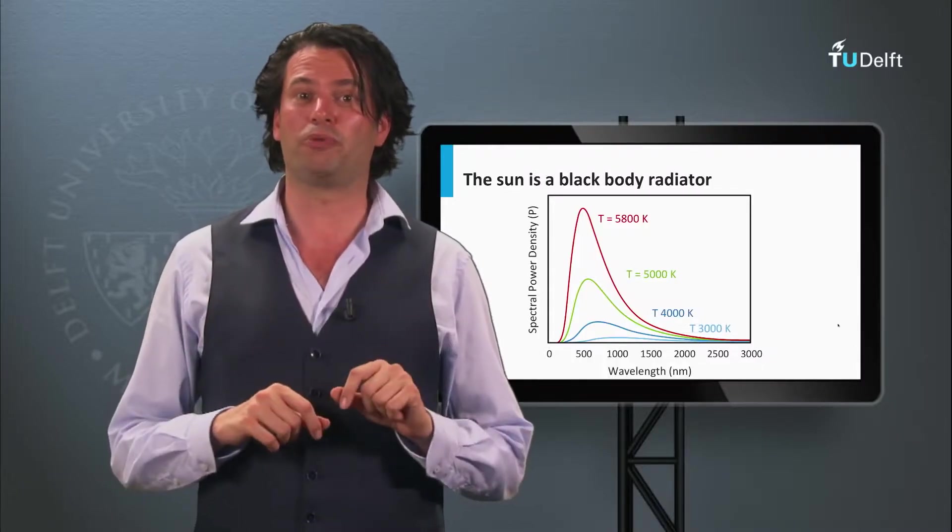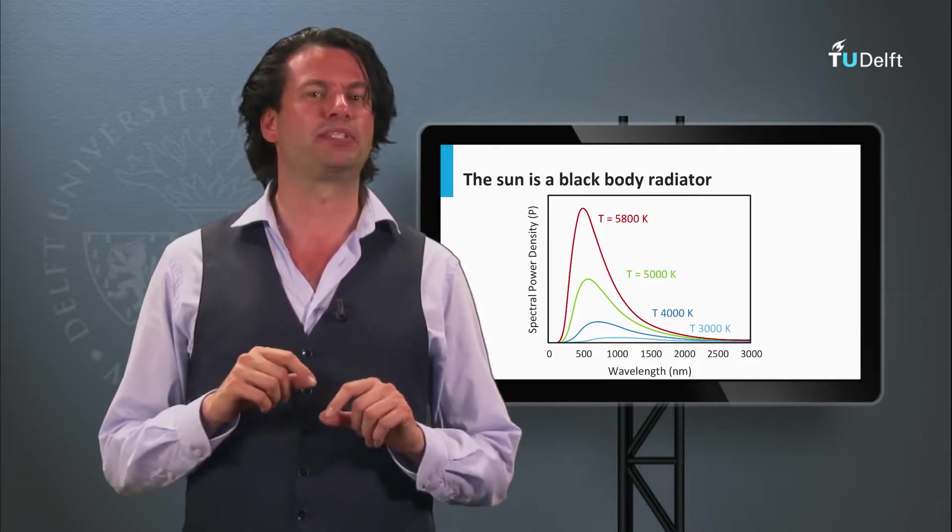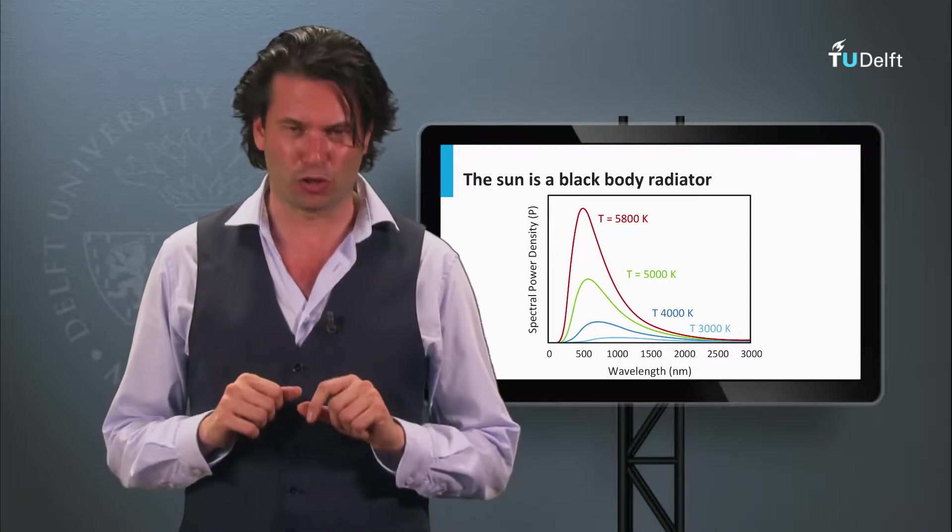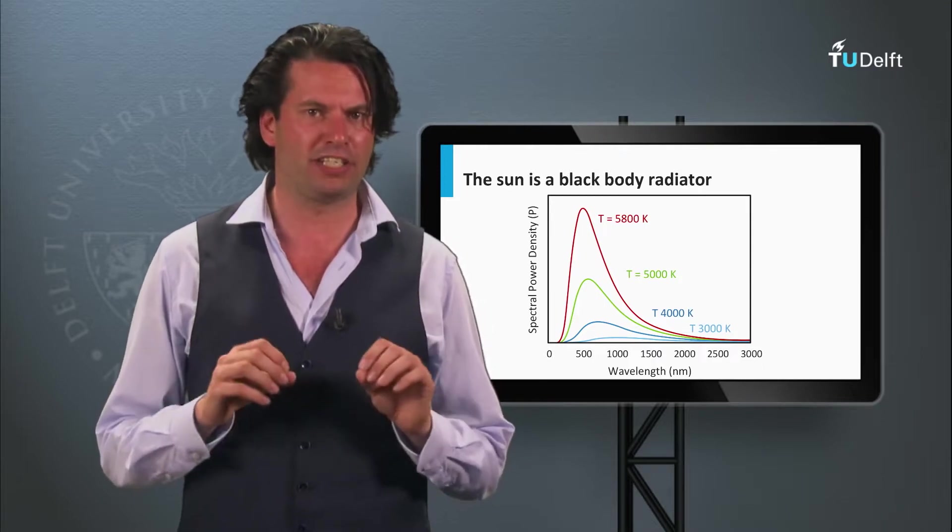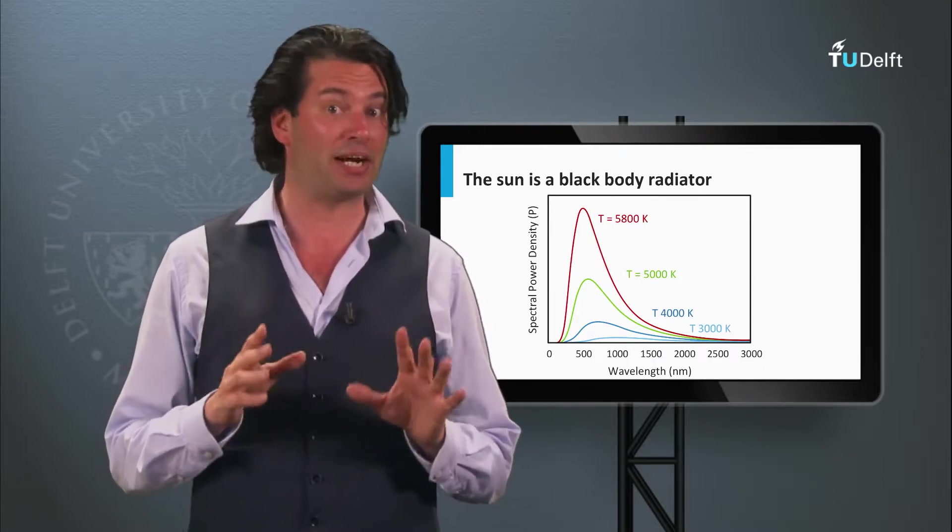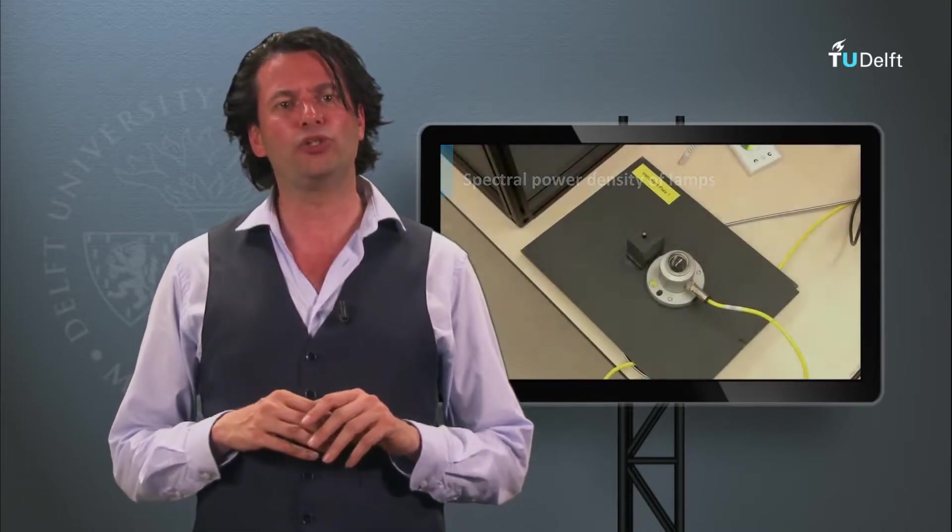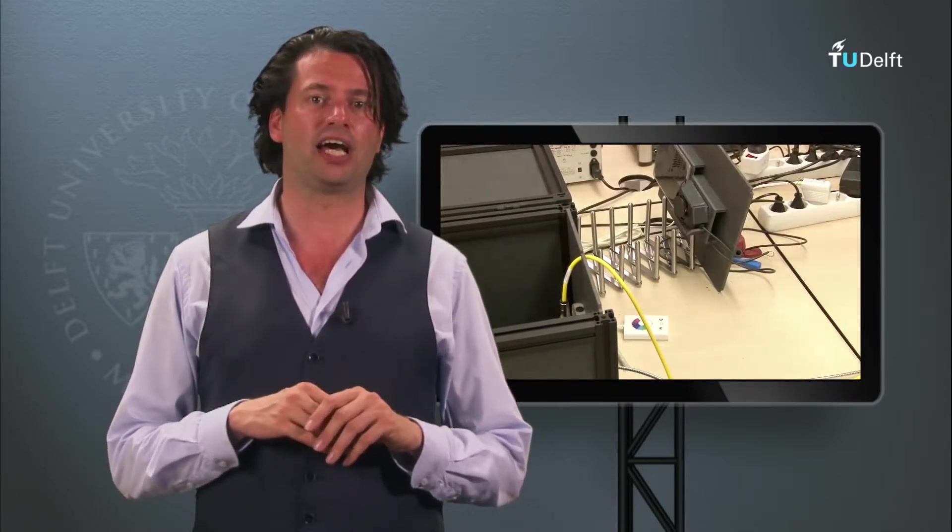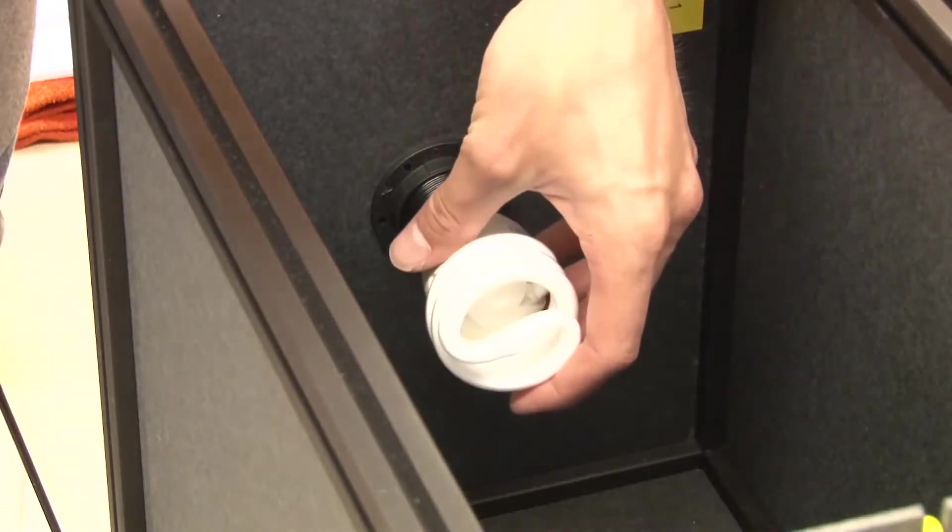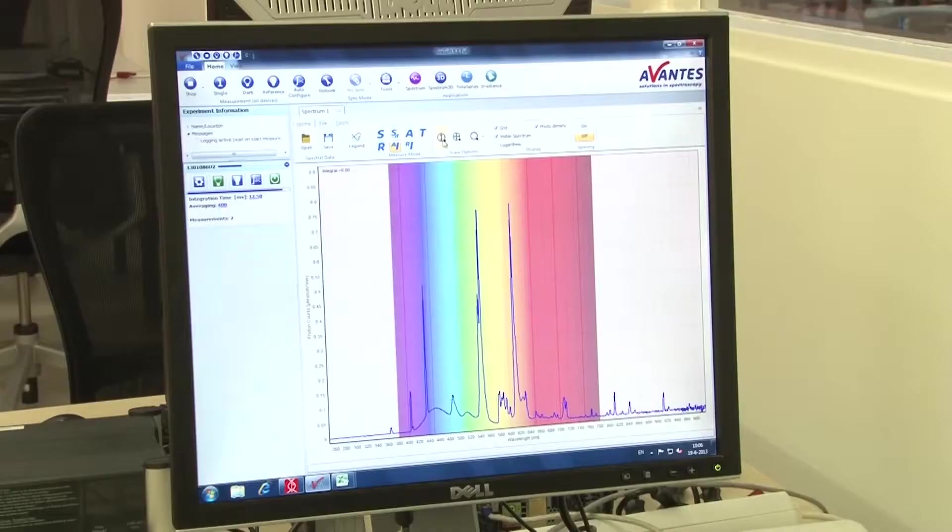To test solar modules we use so-called solar simulators. For that we use lamps which simulate the shape of the solar spectrum. This is far from straightforward as regular lamps have different shaped spectra compared to that of the Sun. Let's go to the Delft Solar Lab and look at two spectra. One of a compact fluorescent lamp and the other of a color changing LED strip. The lamps are placed in a black box and spectra shapes are measured using a spectrometer.